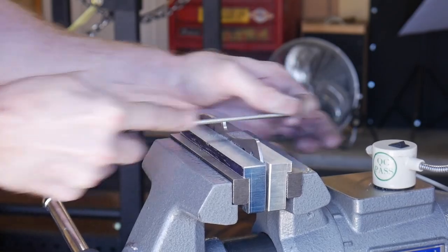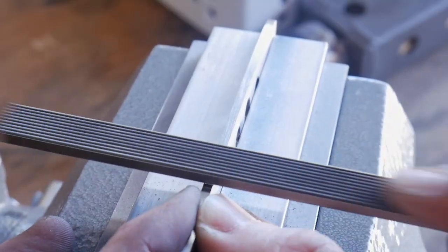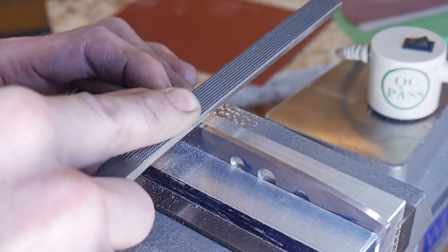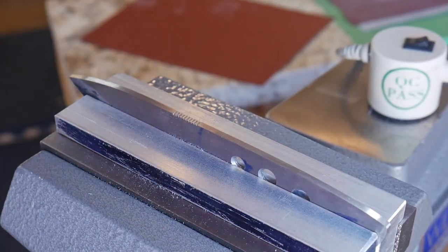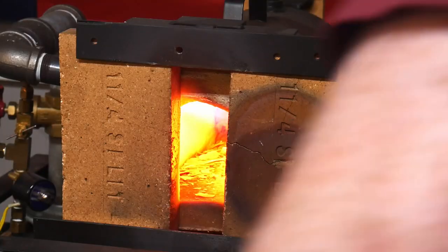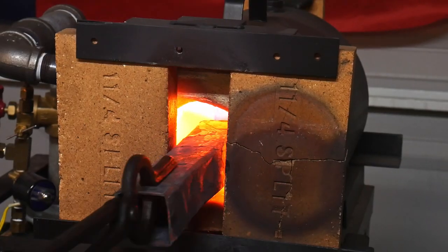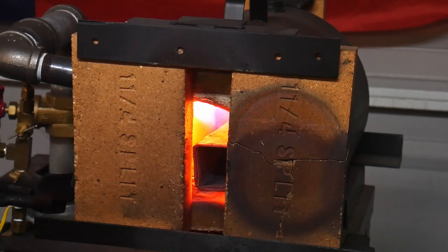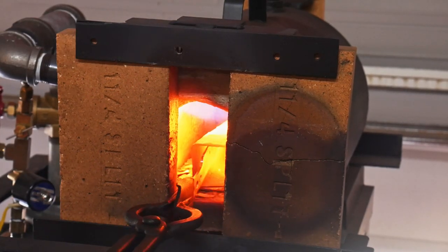I'm going to be filing in my sharpening choil with a 5/32nds chainsaw file and then my jimping with this checkering file. I get a lot of questions on this checkering file, so I'll put a link in the description below to where you can buy that checkering file for your jimping.